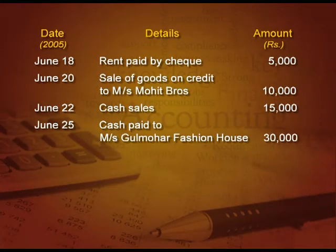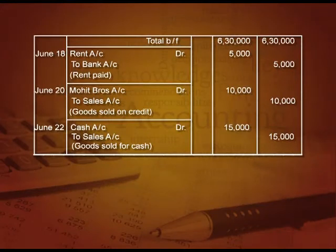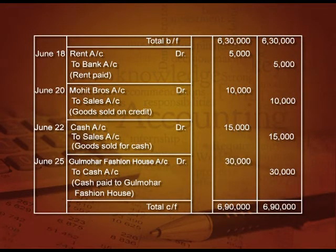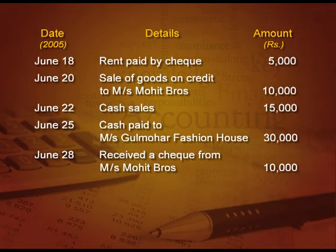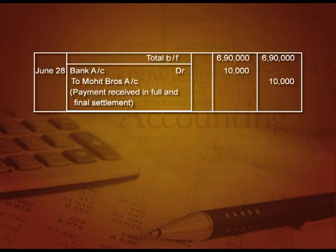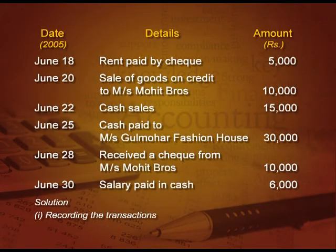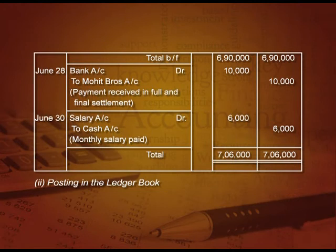Eighth: cash paid to Gulmohar ₹30,000 — Gulmohar account debit to cash ₹30,000. In Gulmohar account 'To Cash ₹30,000' and in the cash account 'By Gulmohar ₹30,000'. Ninth: received a cheque from Mohith Brothers ₹10,000 — bank account debit to Mohith Brothers ₹10,000. In the bank account 'To Mohith Brothers ₹10,000' and in Mohith account 'By Bank ₹10,000'. Tenth: salary paid in cash ₹6,000 — salary account debit to cash ₹6,000. In the salary account 'To Cash ₹6,000' and in the cash account 'By Salary ₹6,000'.